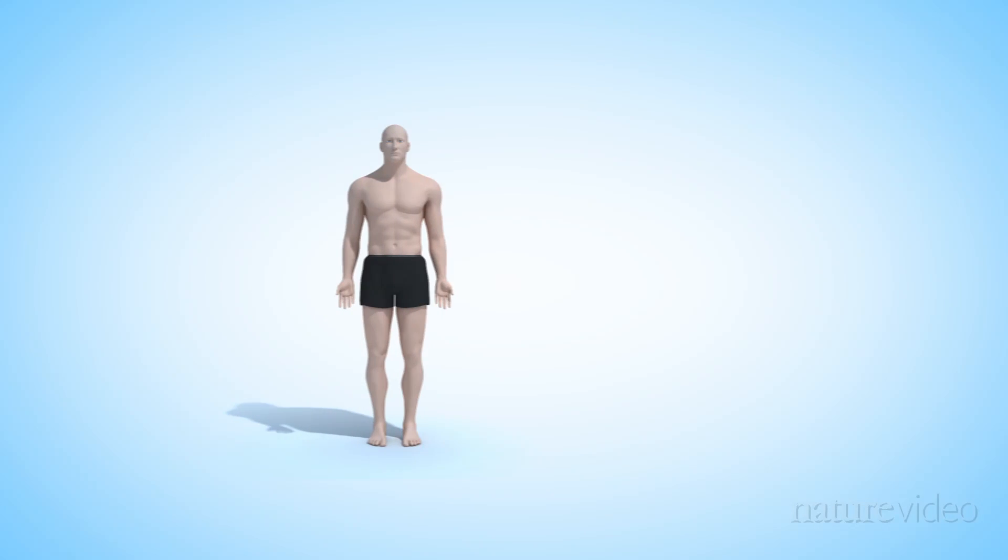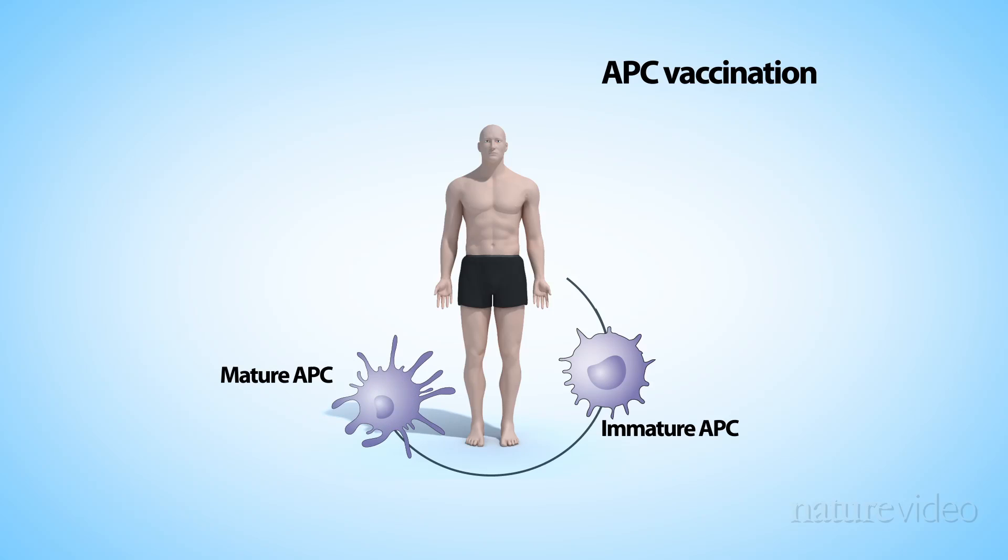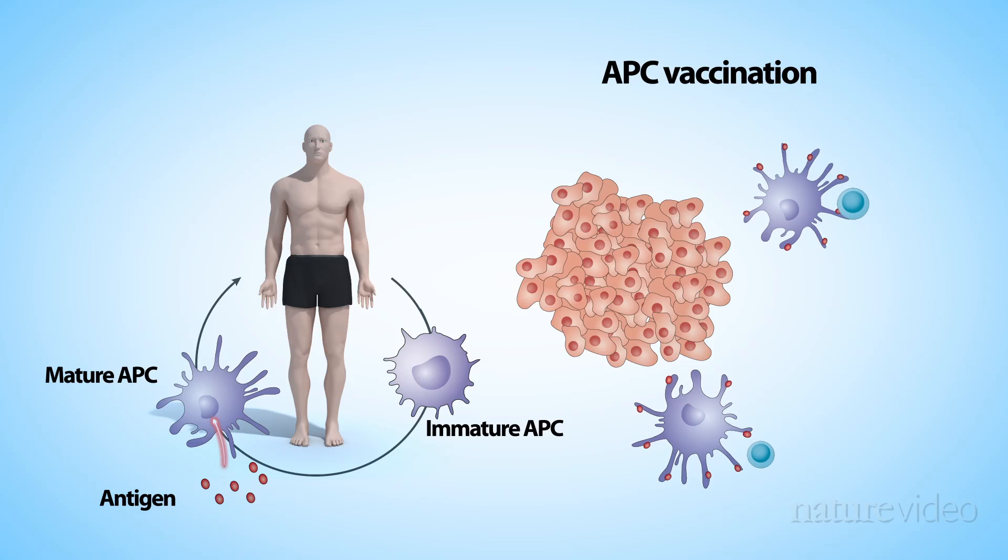But it's also possible to vaccinate with a person's own immune cells. For example, antigen-presenting cells can be taken from patients, matured outside the body, and loaded with tumor antigen. When the cells are reintroduced to the patient, the antigen stimulates other immune cells and helps them to recognize the tumor.